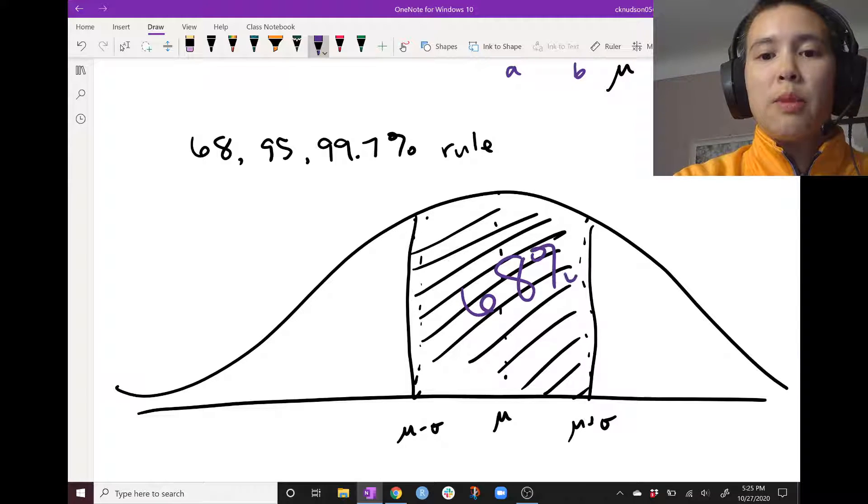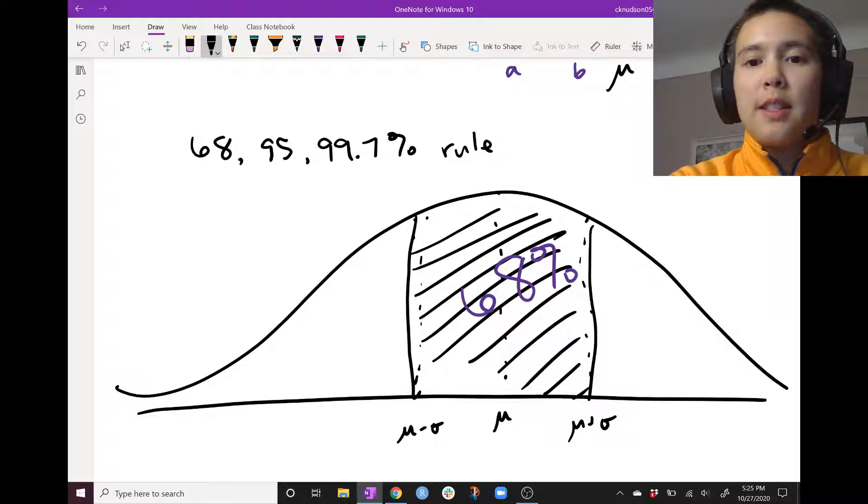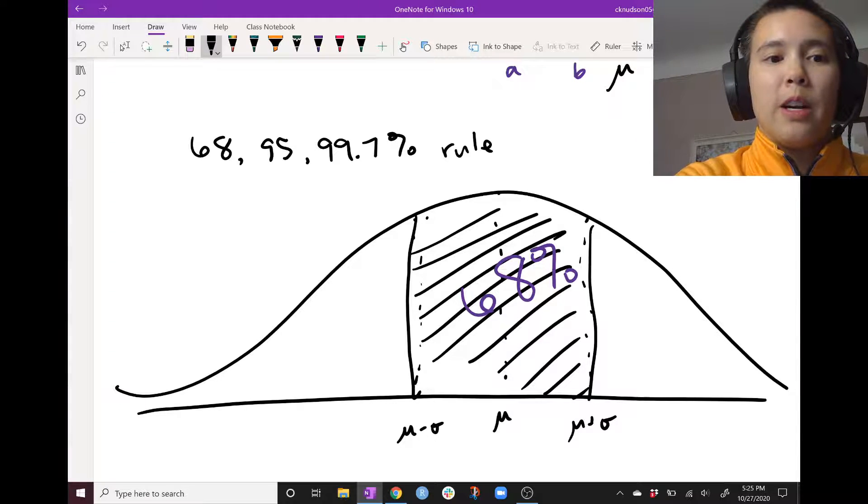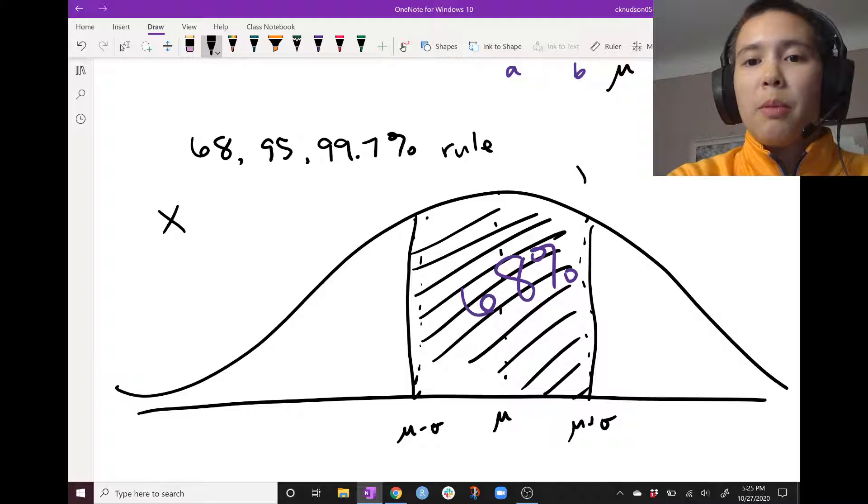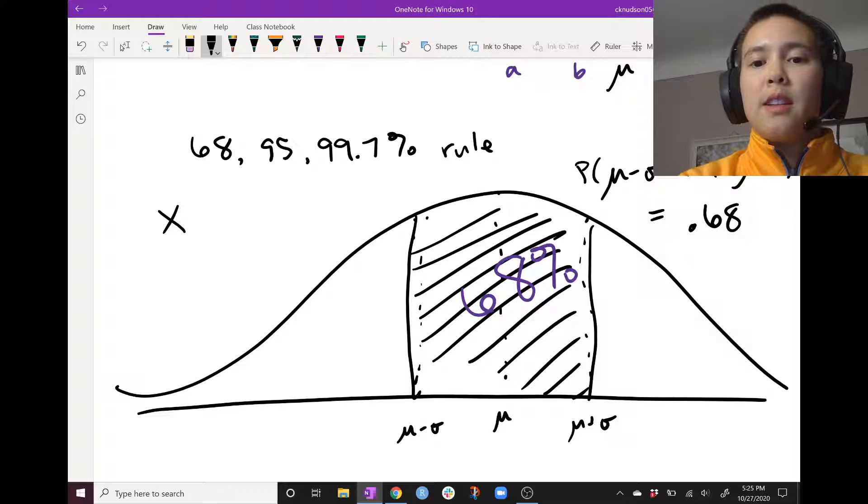So here's 68%. In other words, this is saying that let's have our random variable be called x. The probability that x is between mu minus one sigma and mu plus sigma is equal to about 68% or 0.68.